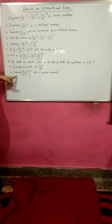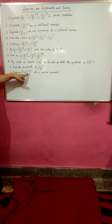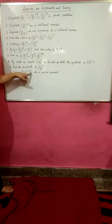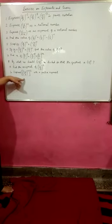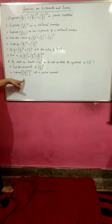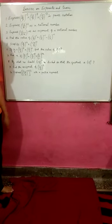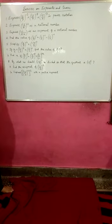Next: express [(-3/7)^-3]^2 with a positive exponent. Whatever answer comes, you have to convert that answer into a positive exponent, and you have to keep the answer in exponent form only. Thank you.